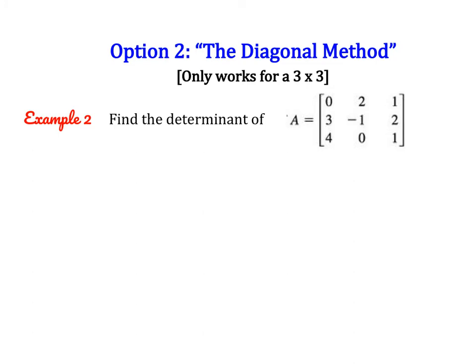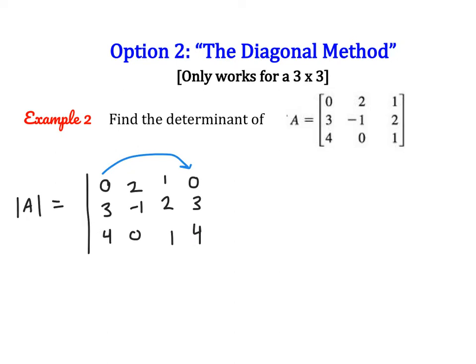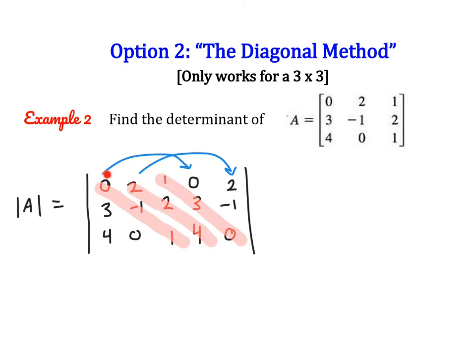Now I'm going to show you another way to find the determinant of a 3x3 — I call this the diagonal method. It will always work for 3x3, but it won't always be the fastest way. Don't forget about the cofactor formula, because depending on the numbers, this version might actually take longer. Here's how it works: to find the determinant, we write our first three columns, then replicate the first column and the second column alongside. We multiply across the diagonals, similar to a 2x2.